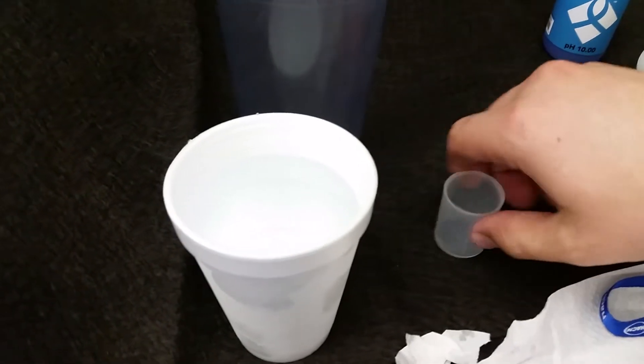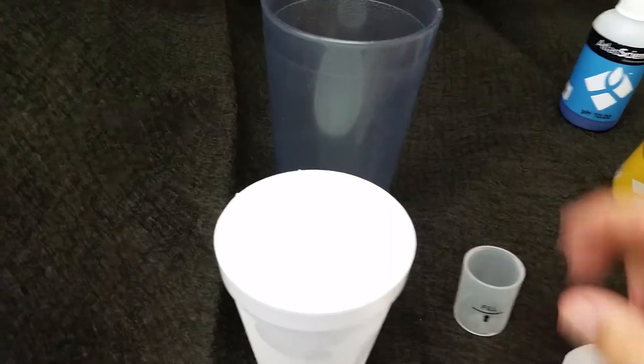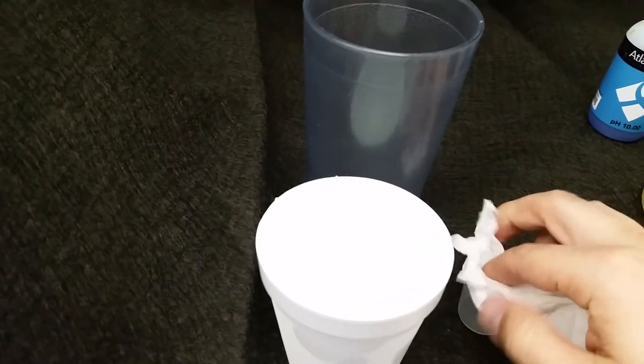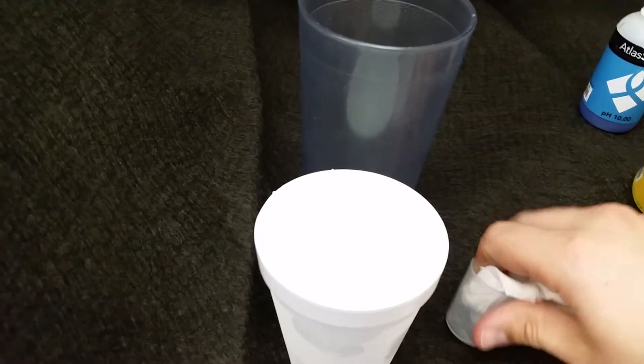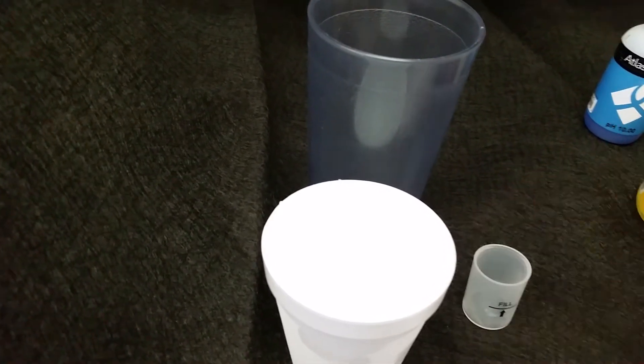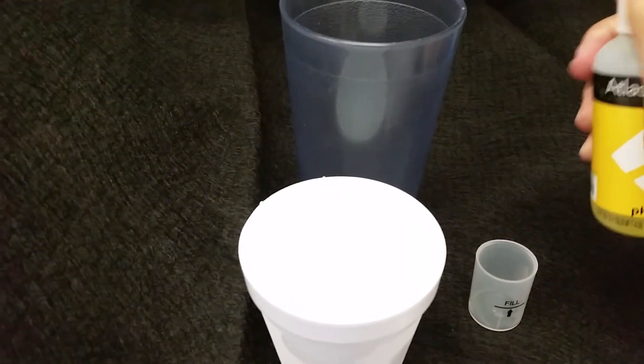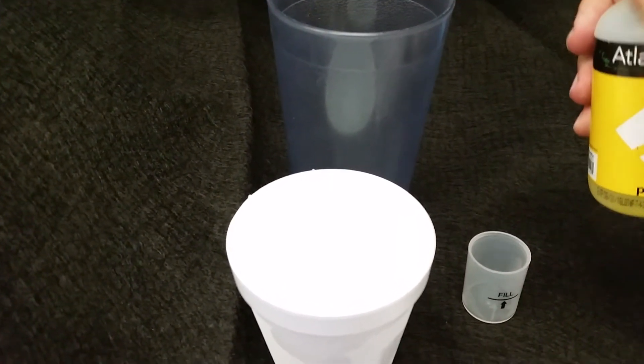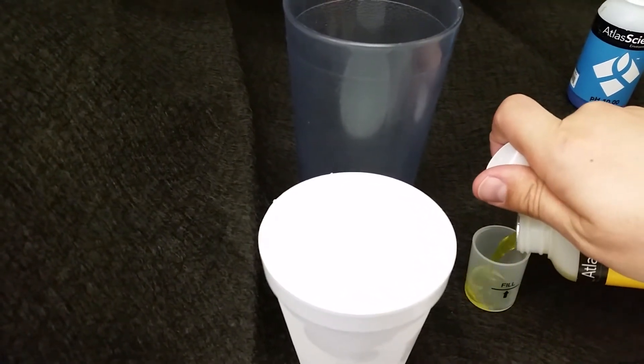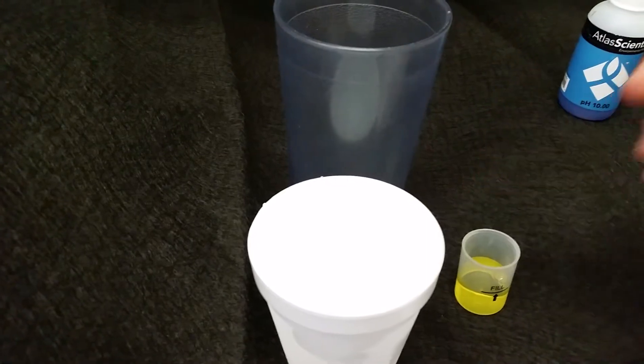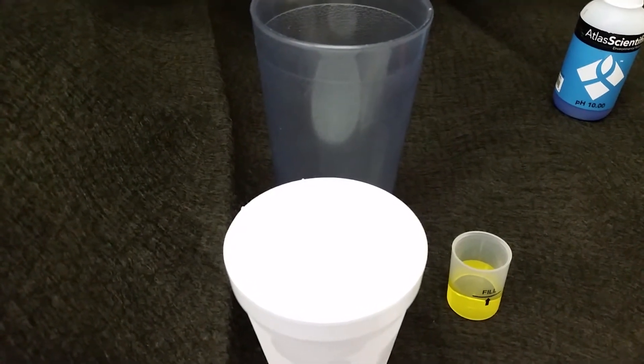Okay, so once everything is dry, you just grab your pH solution and pour that into the cap until it gets to the fill line. Set that off to the side so you don't spill it.